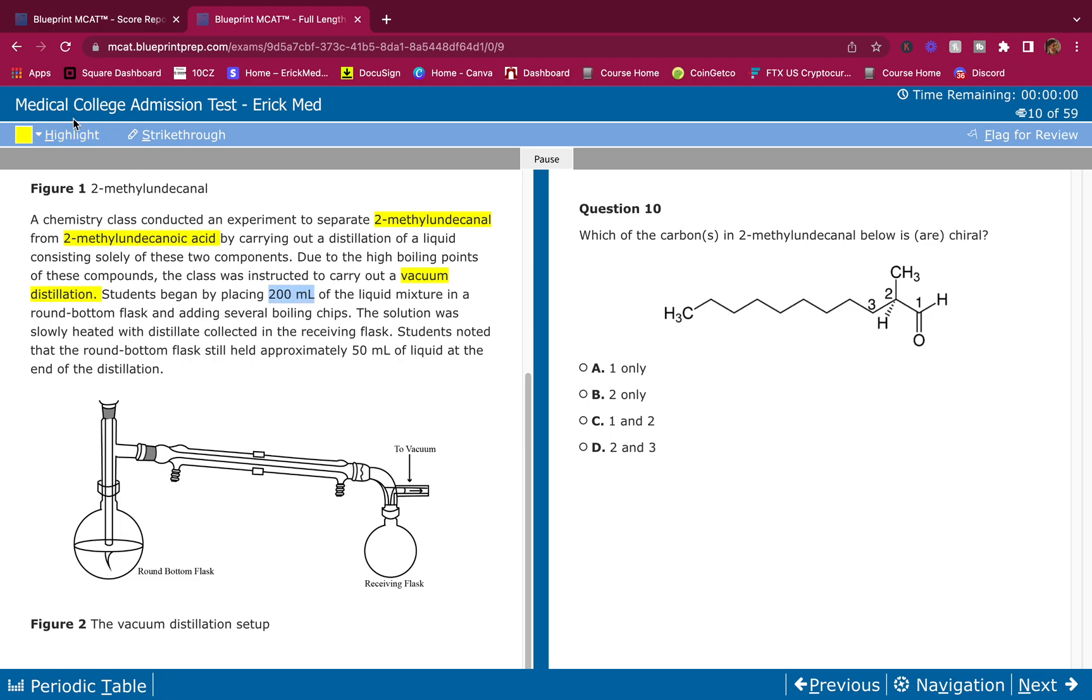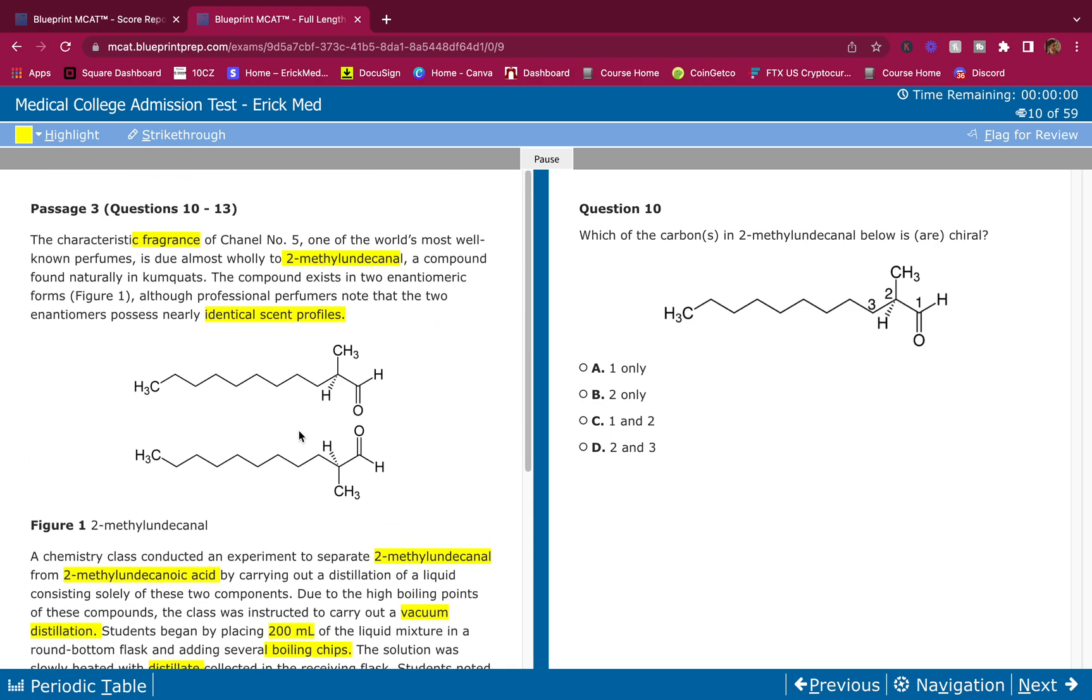Due to the high boiling points of these compounds, the class was instructed to carry out a vacuum distillation. You guys should know the difference between vacuum, simple, and fractional distillation. Students began by placing 200 milliliters of the liquid mixture in a round bottom flask and adding several boiling chips. You should know what boiling chips do - they prevent superheating of the solution or liquid. The solution was slowly heated with distillate collected in the receiving flask. Students noted that the round bottom flask still held approximately 50 milliliters of liquid at the end of distillation.